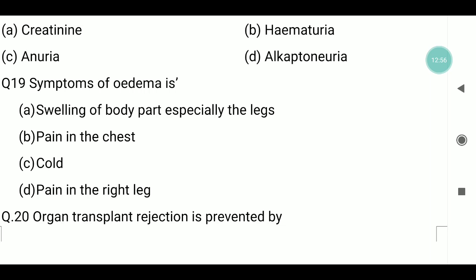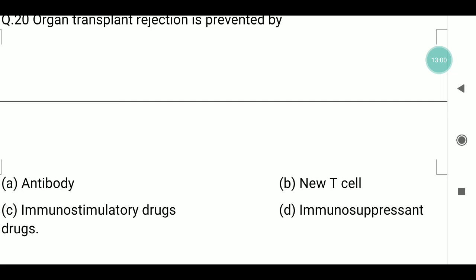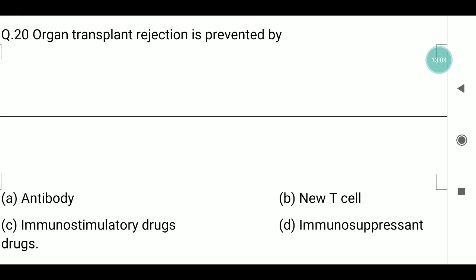Question number twenty: organ transplant rejection is prevented by what? When we take a transplant — for example a kidney — our antibodies treat the new organ as a foreign particle and try to reject it. To prevent this, we use immunosuppression, which suppresses the antibody response. The answer is D, immunosuppression. An example of an immunosuppressant is cyclosporine.